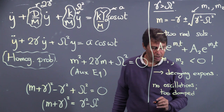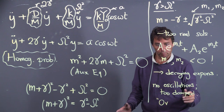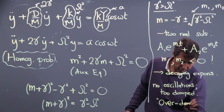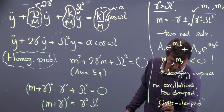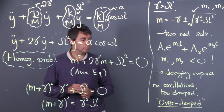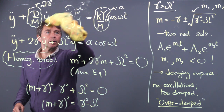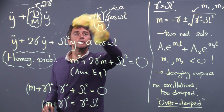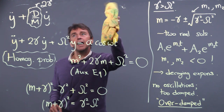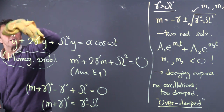Traditionally this is called overdamped. It's still an oscillator because it has a spring, but the damping is too much — it wipes out the oscillations. This happens if you have a relatively viscous medium giving a lot of drag. If you're in air, that's not what you'll get; the damping won't be that strong.